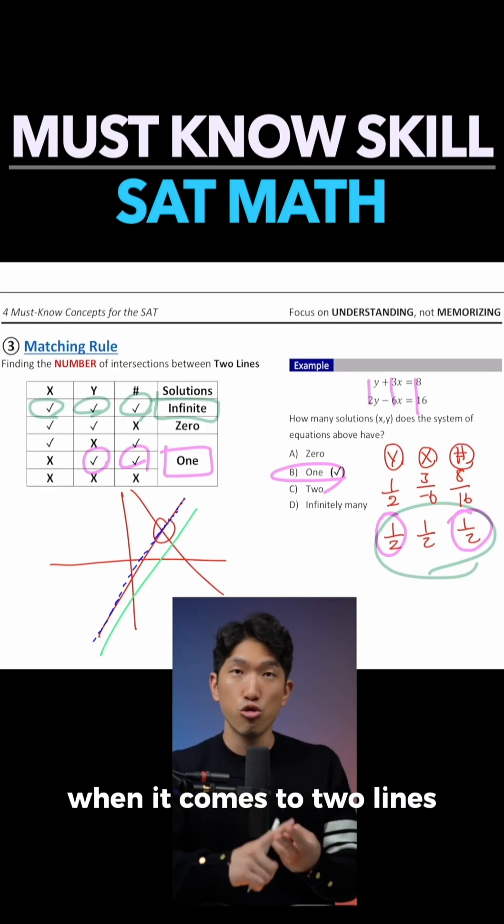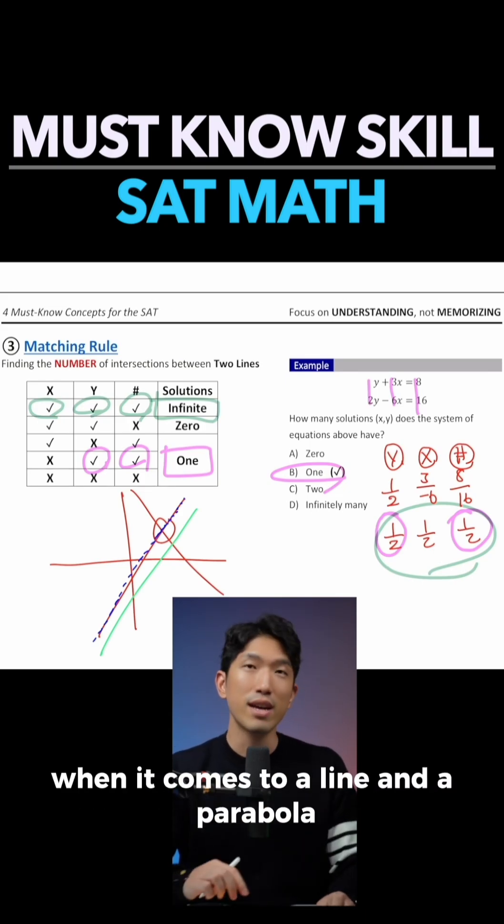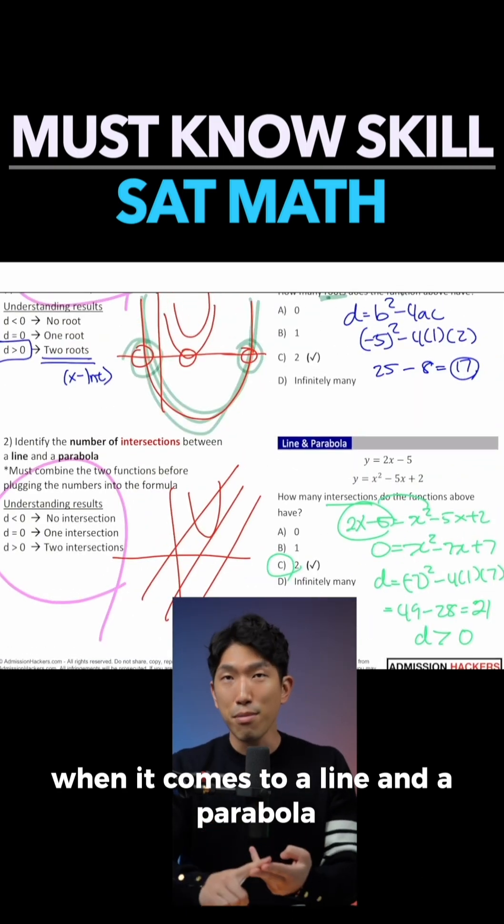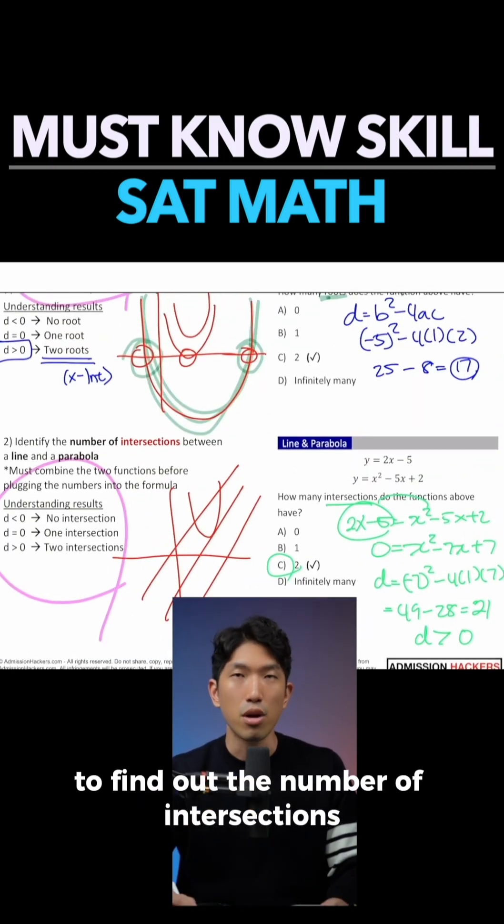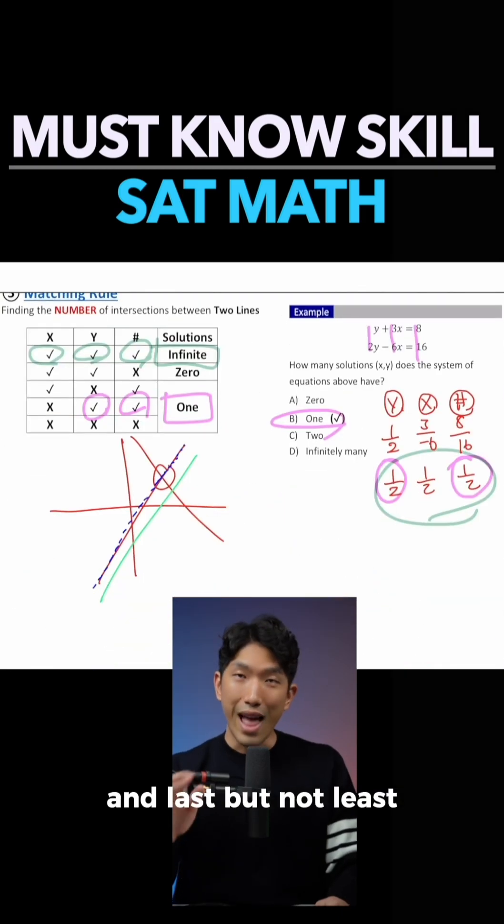So the main takeaway here is, when it comes to two lines, use the matching rule. When it comes to a line and a parabola, use the discriminant to find out the number of intersections. It's that simple.